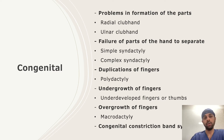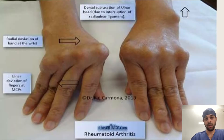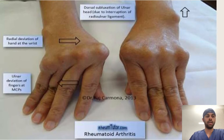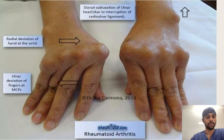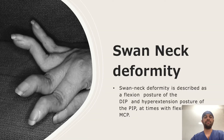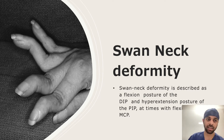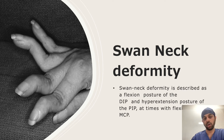Now we start with the major deformities. This is a classical picture after rheumatoid arthritis — you can see the radial deviation of the hand at the wrist, ulnar deviation of the fingers at the MCP, and dorsal subluxation of the ulnar head. The first deformity is the swan neck deformity. If you see the finger, it looks like the neck of a swan — with flexion of the distal interphalangeal joint, hyperextension of the PIP joint, and sometimes even flexion of the MCP joint.